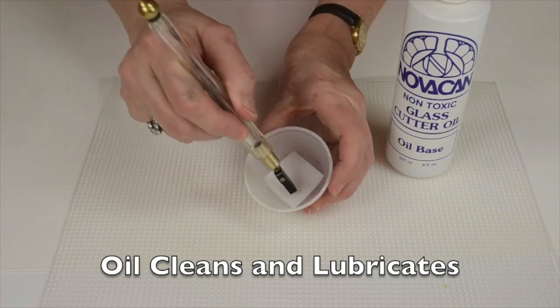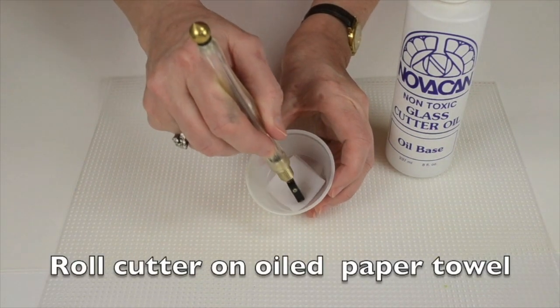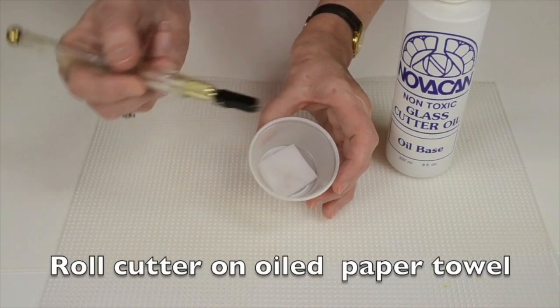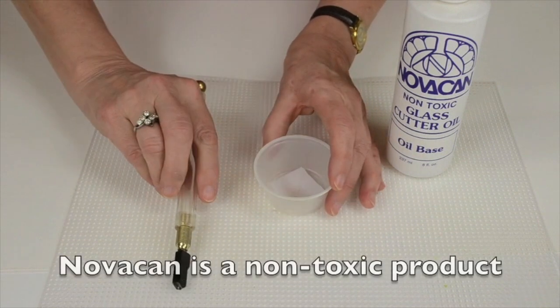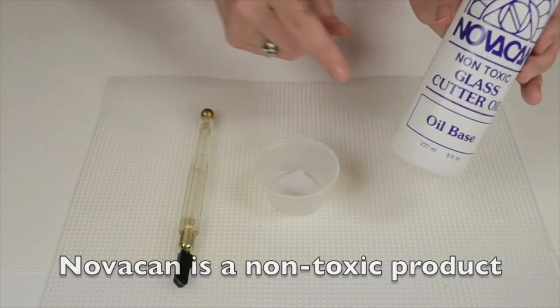Every few cuts or so, you want to take your cutter wheel and run it across some paper toweling that's been soaked in cutting oil. It keeps it clean and lubricated.